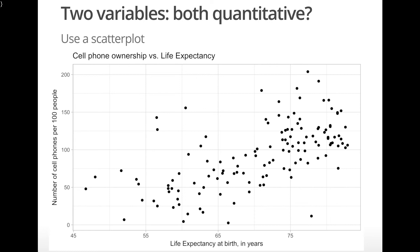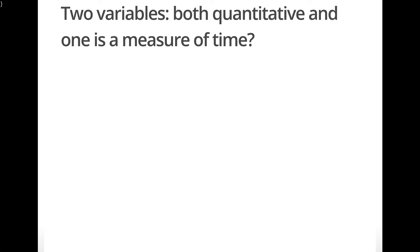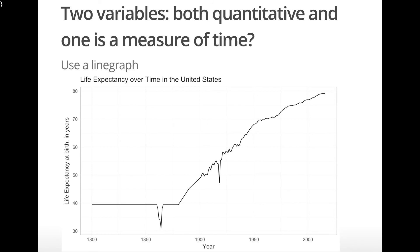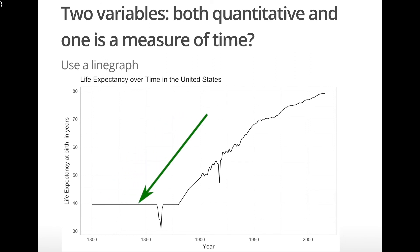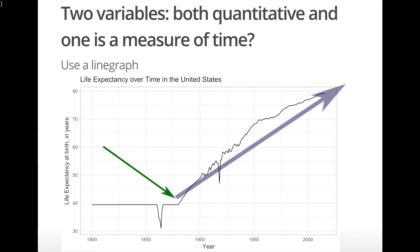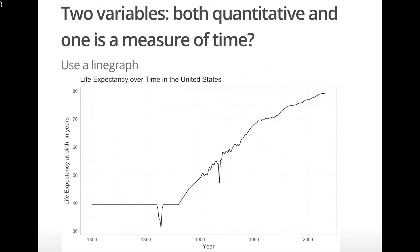Finally, what if we wanted to see how average life expectancy changes over time in the United States? Here again, we have two quantitative variables, but one represents time, so we can use a line graph. This line graph shows life expectancy in the United States in each year from 1800 to 2015. We notice a period of constant life expectancy around 40 years in the early 1800s, followed by a steady increase starting around 1875 until now, where life expectancy is around 80 years. There are also two interesting dips in average life expectancy in the 1860s and the 1920s.